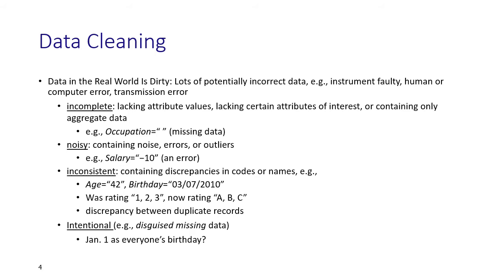Noisy data contains noise, errors, or outliers. For example, a salary of minus 10 — a salary cannot be negative, so this is basically an error or outlier. Inconsistent data means disparities in values. For example, if age is 42 and birthday is 3/7/2010, both cannot be correct simultaneously. One of the values is incorrect, making the data inconsistent.